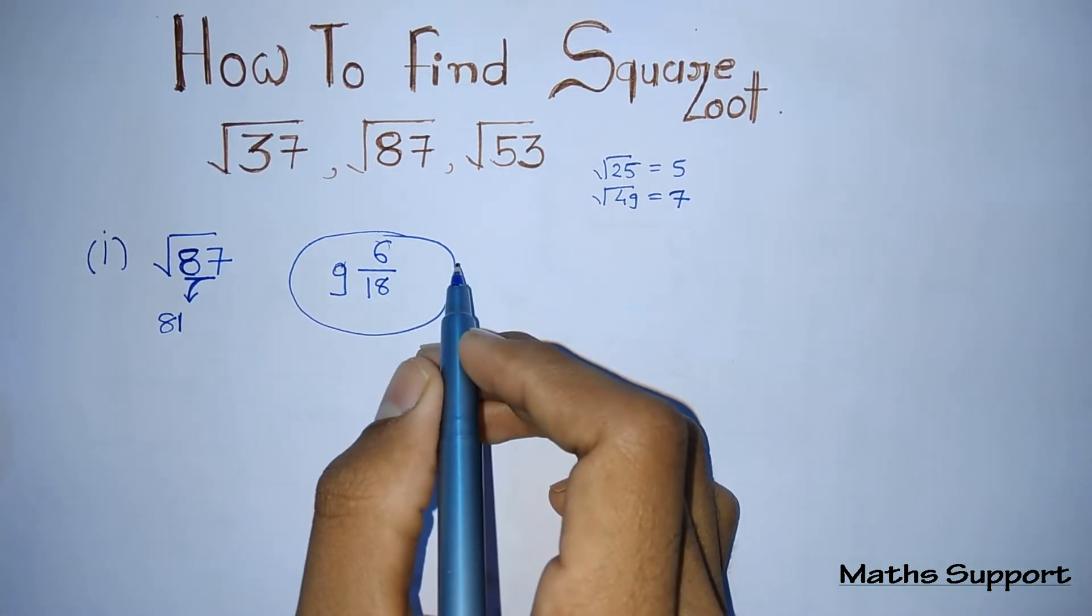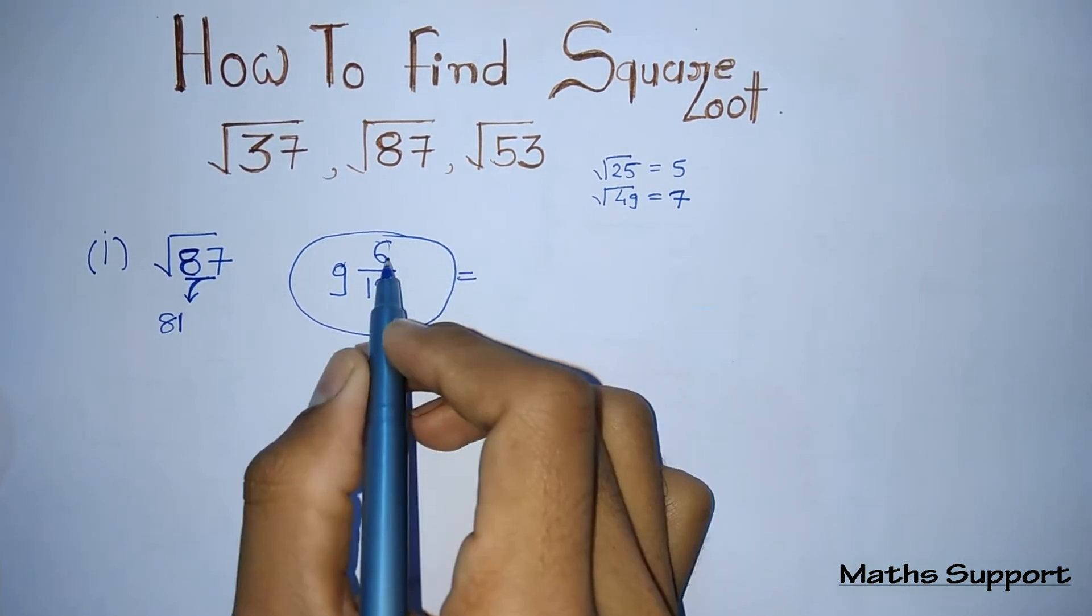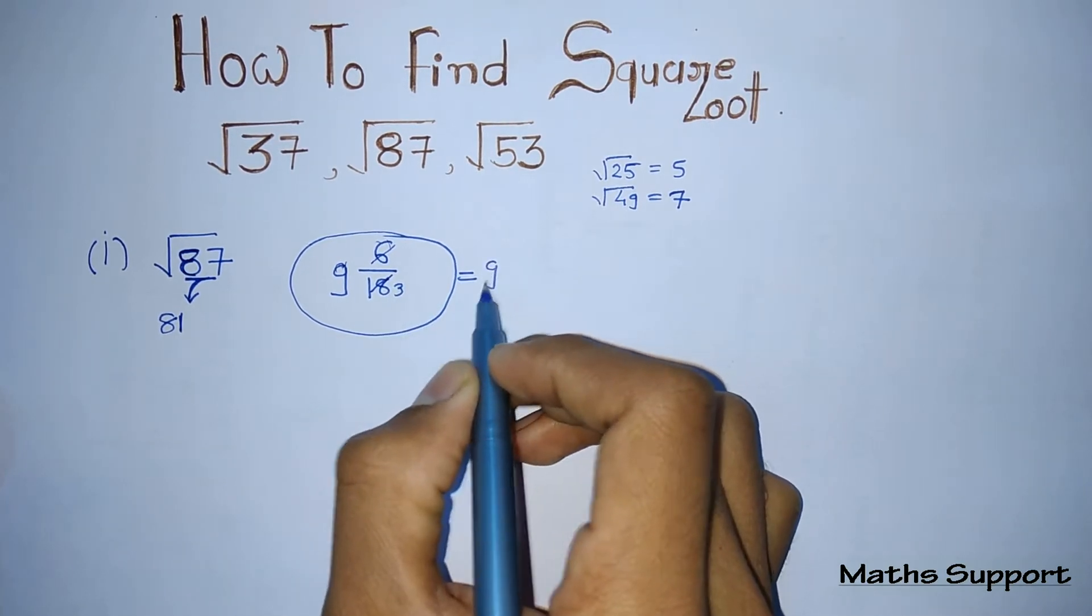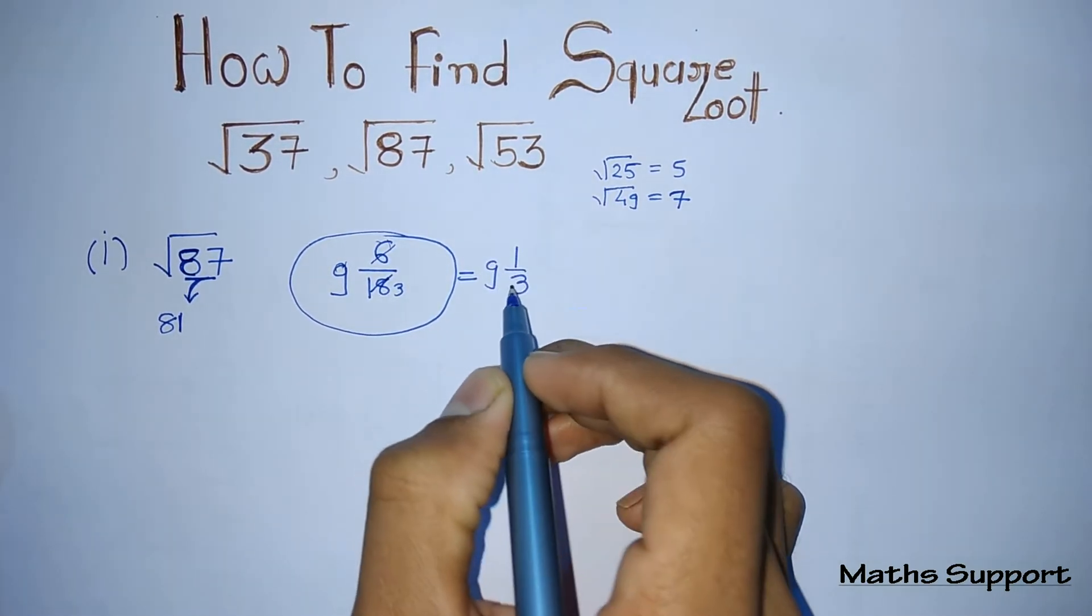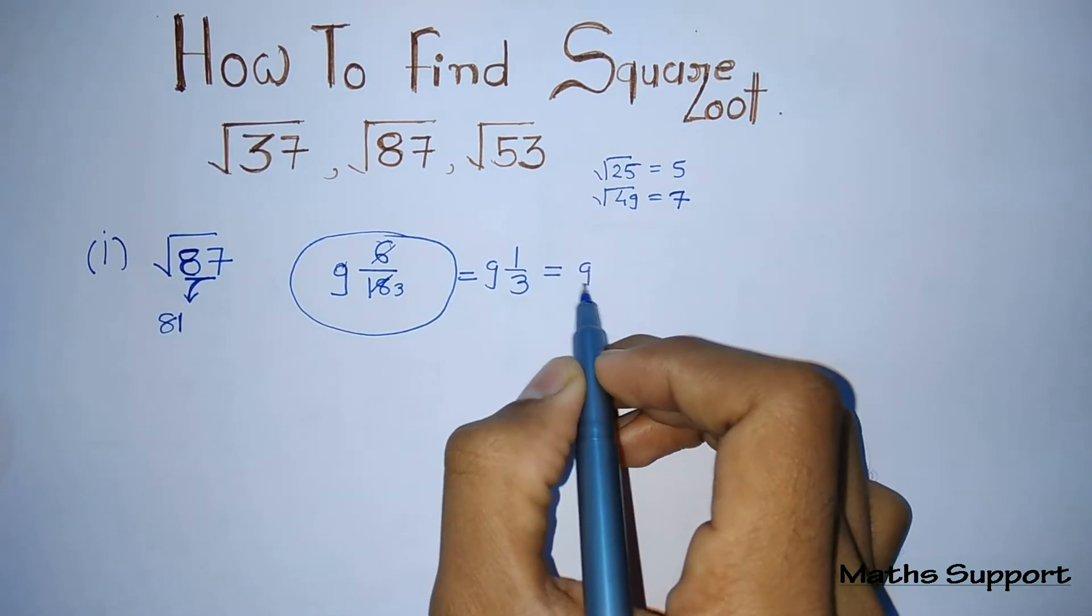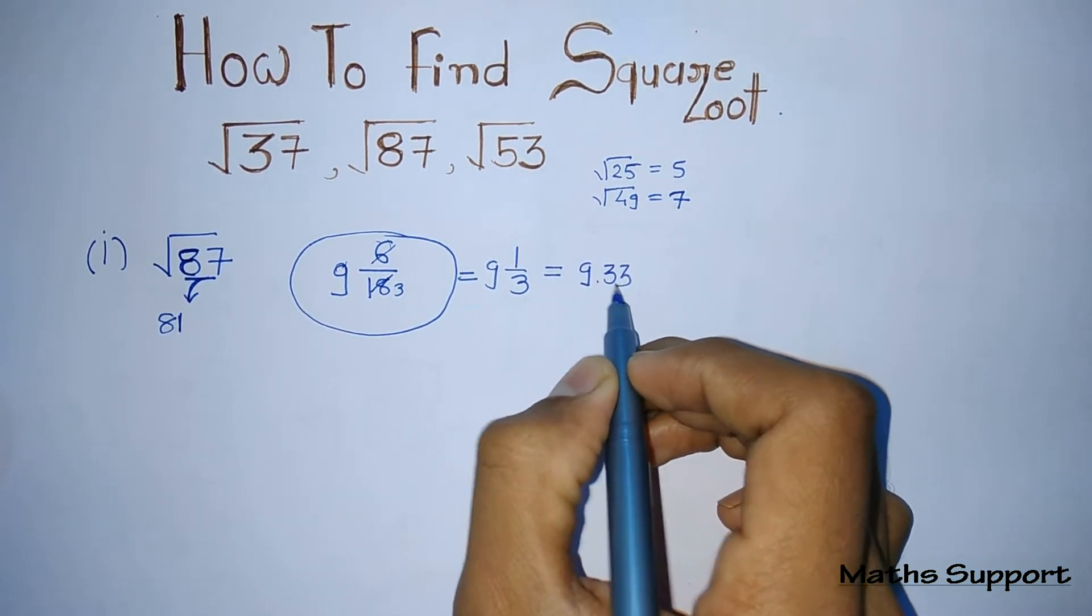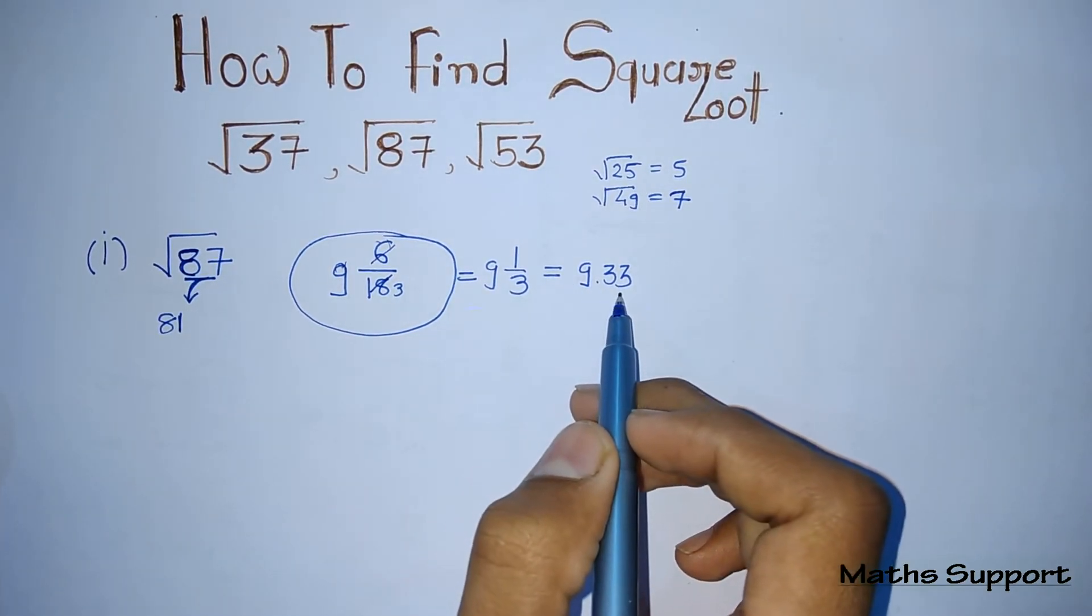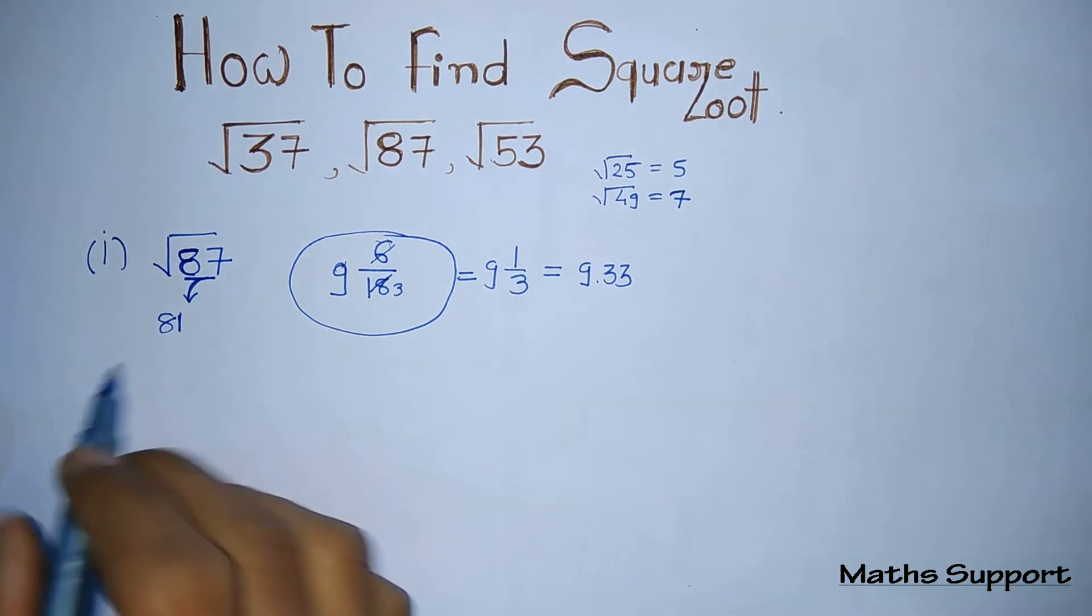Simplifying, 6 over 18 is 9 and 1/3. And 1/3 is 0.33, as we all know. So 9.33—square root of 87 is 9.33. It's very simple.